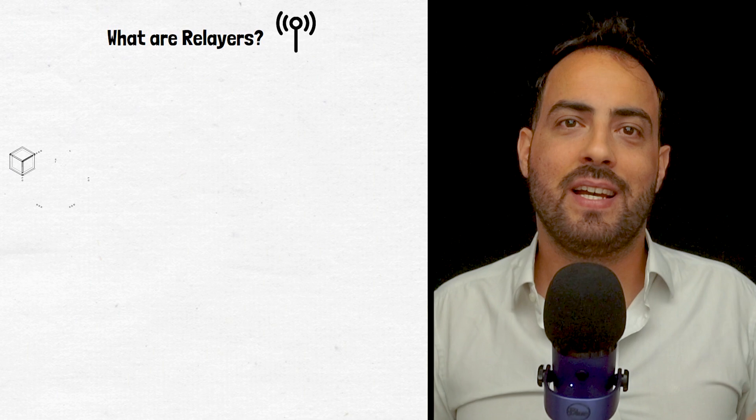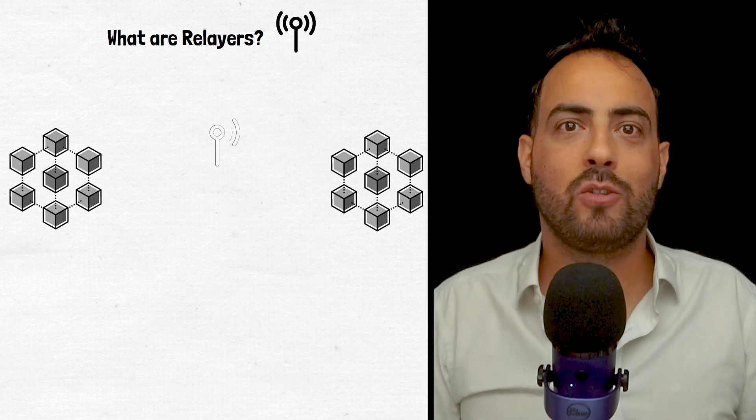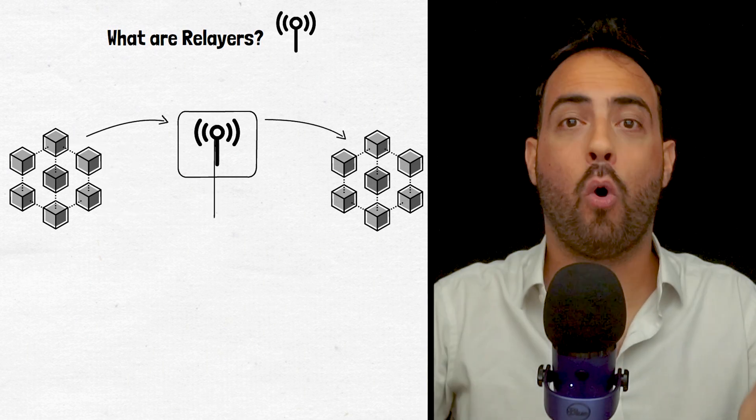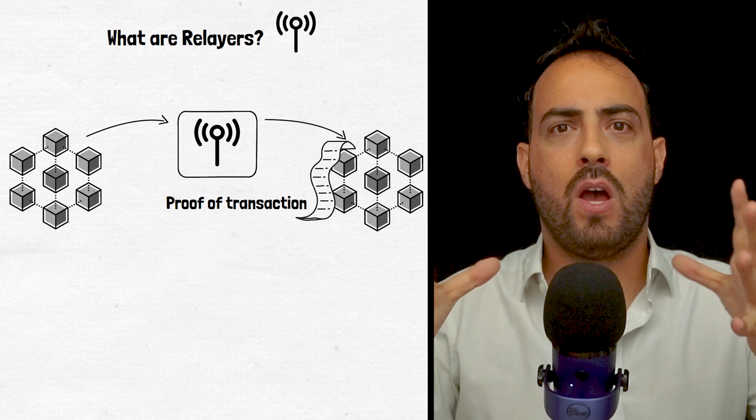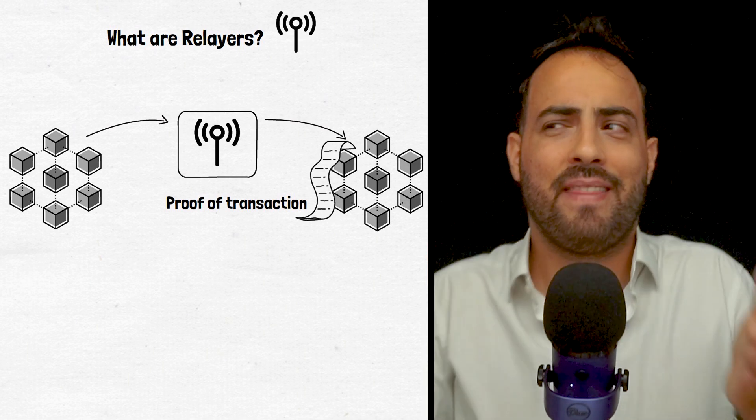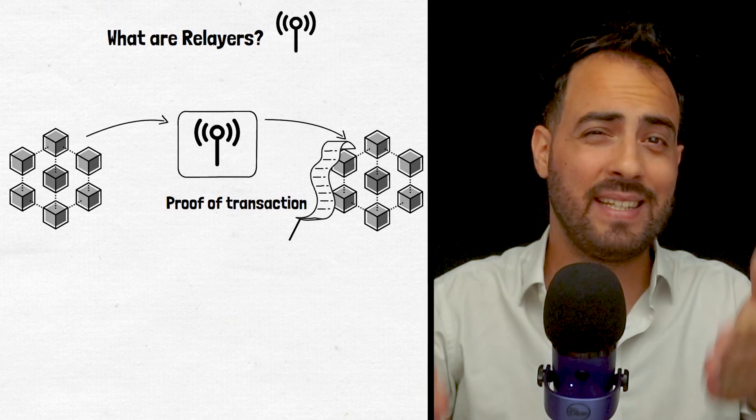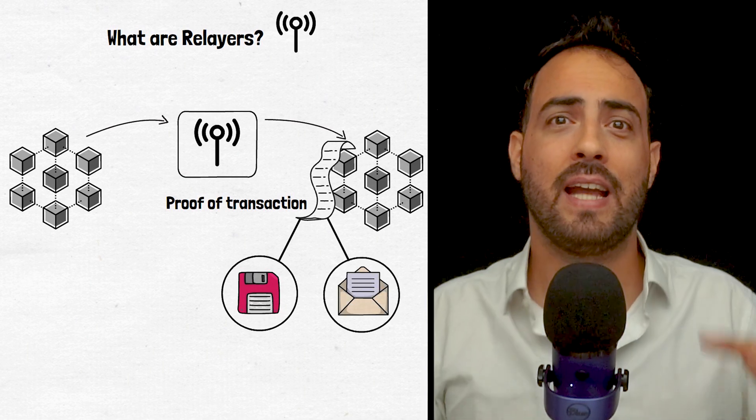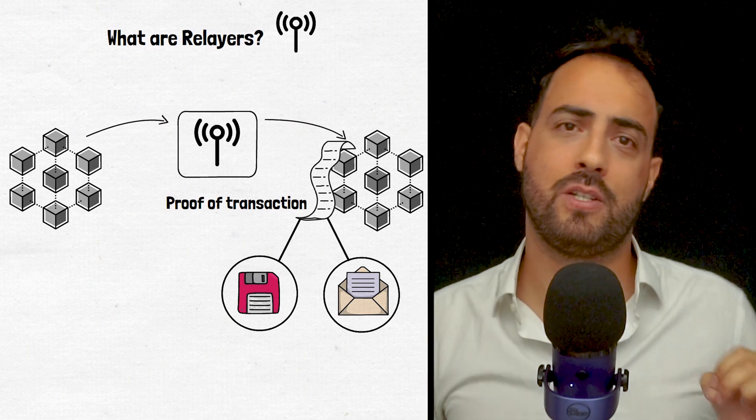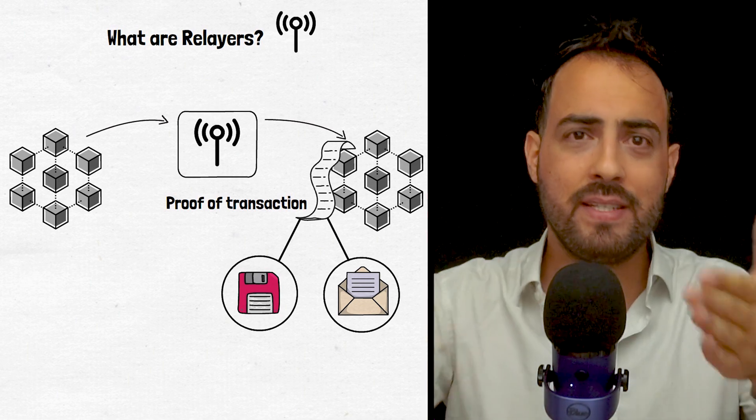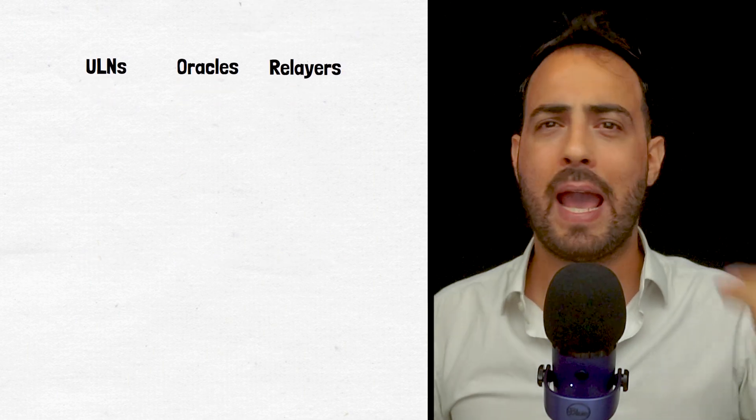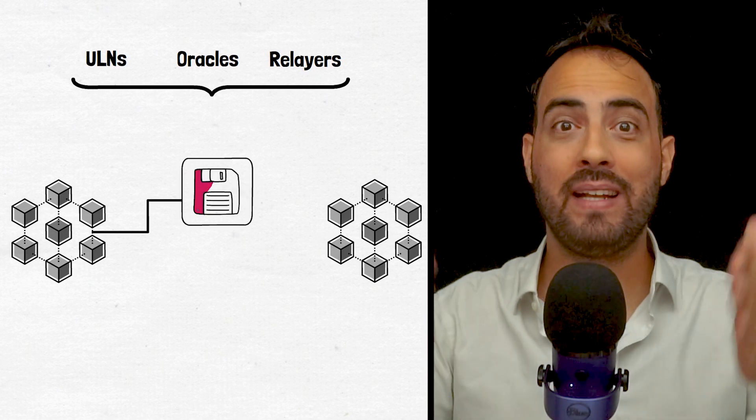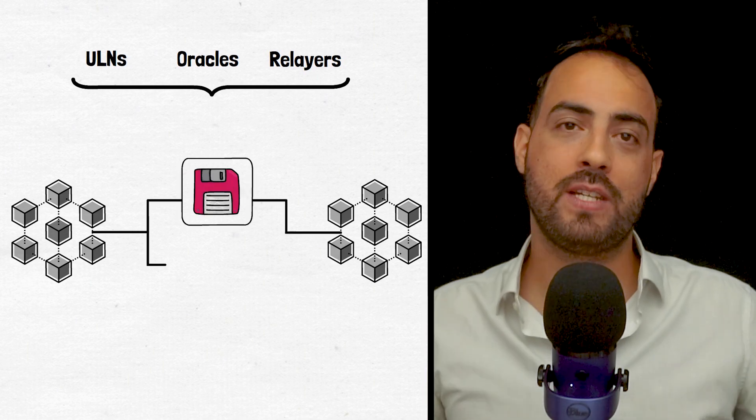Finally, there are relayers. Relayers are necessary to complete a messaging cycle between communicating networks by sending proof of the transaction to the end destination. With the proof provided, the destination blockchain can integrate the data or message from the source blockchain into its own network and also execute any possible commands from the message. Between these three elements, Layer 0 aims to make all smart contract-enabled blockchains capable of interacting and sending data and messages to each other.